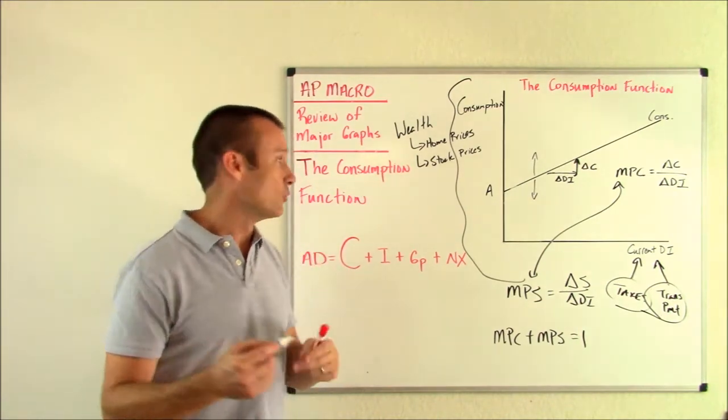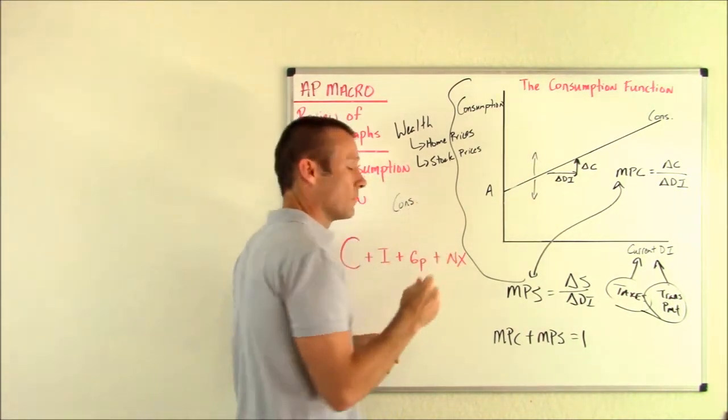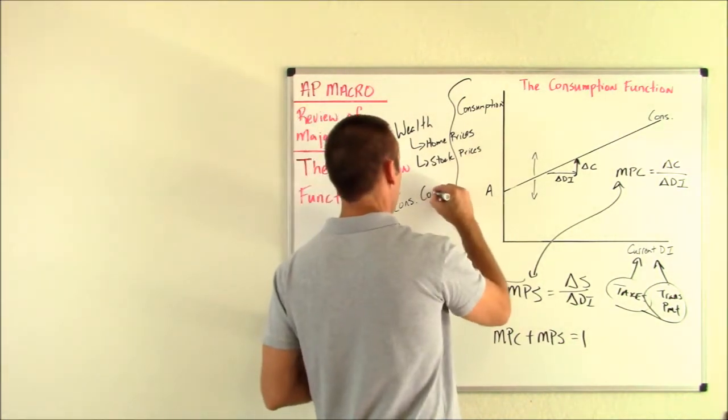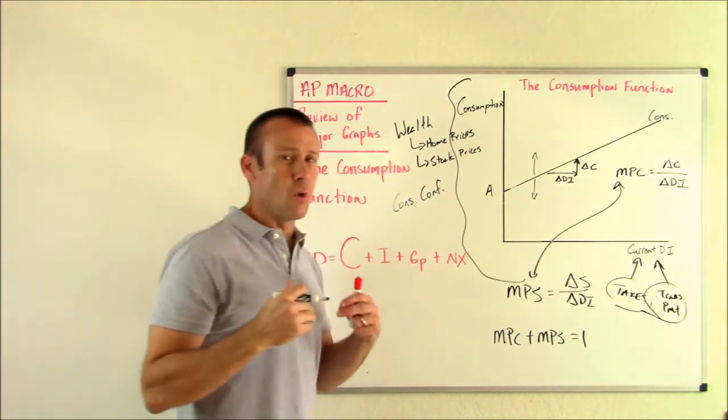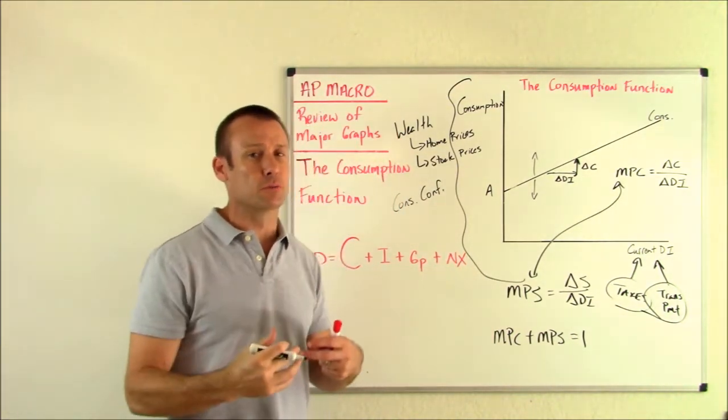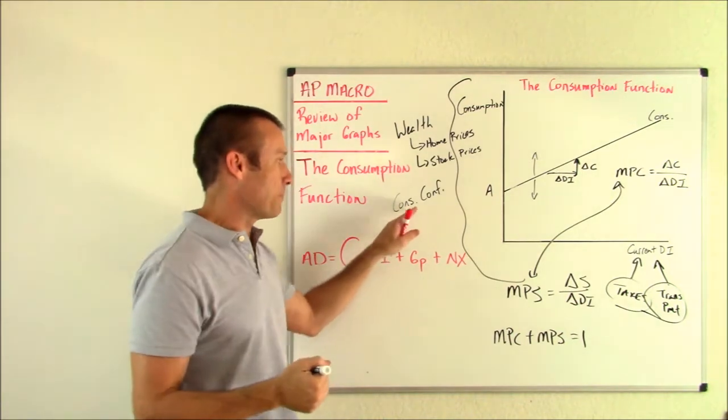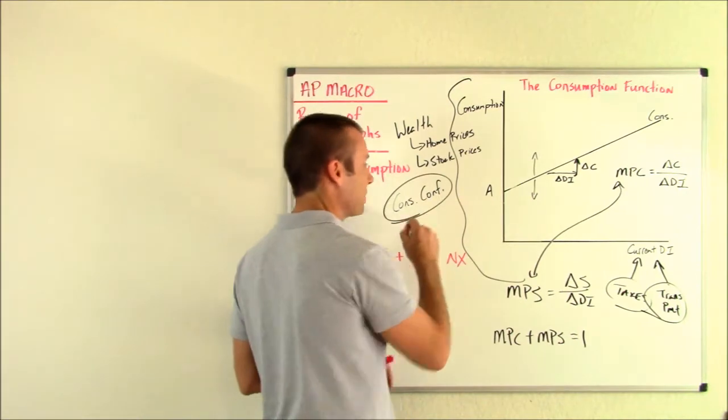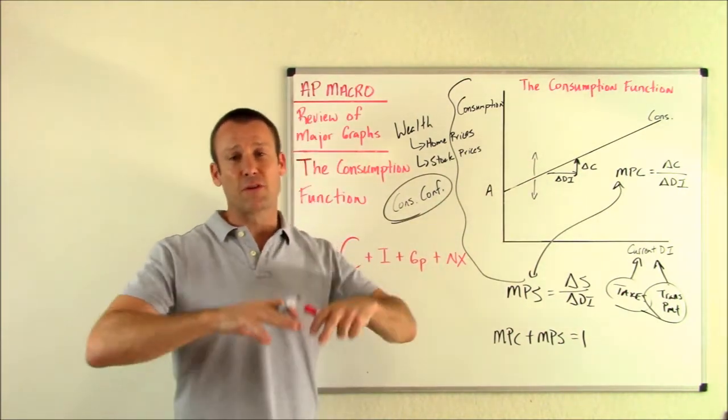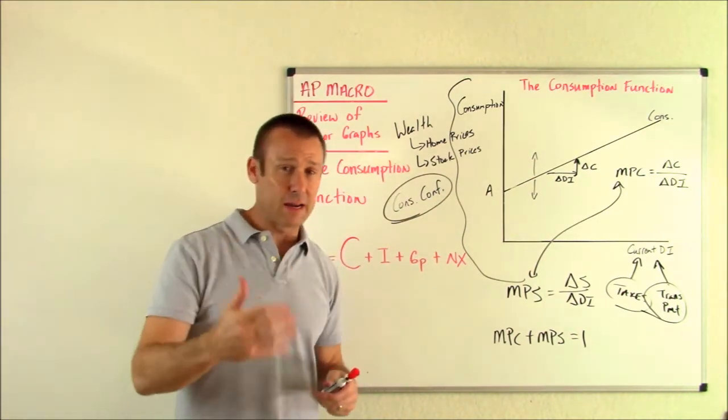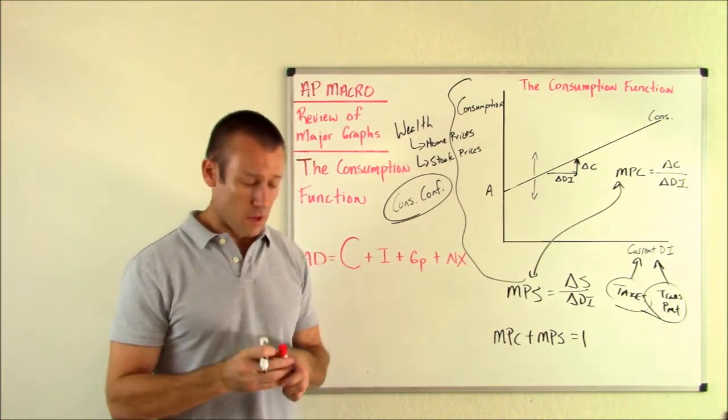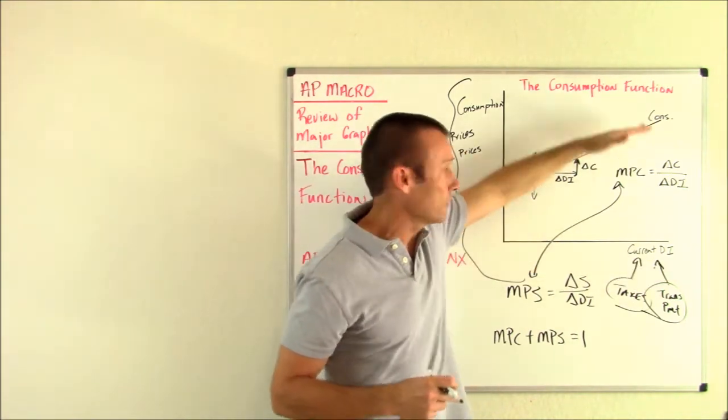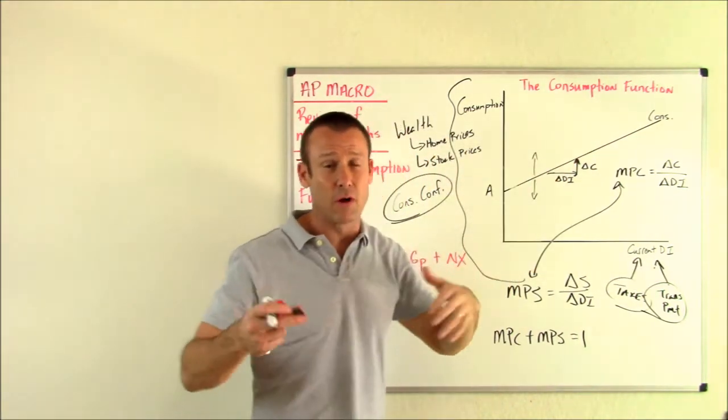The other one is consumer confidence. It's sometimes stated as consumer's expectation of future disposable income. Consumer confidence. But think, what is their expectations about future disposable income based upon? It's based upon their consumer confidence about the economy. So consumer confidence also is going to shift that curve. If people start feeling better about the economy, they expect their future disposable income to go up, what will they do? They will begin to spend a little bit more at all levels of their disposable income. That's just how we are. We get more optimistic.